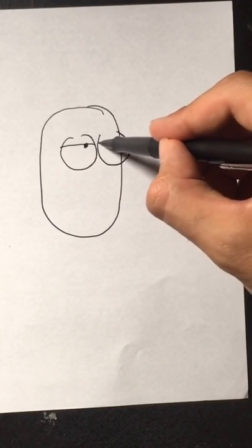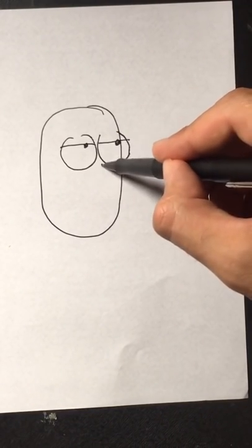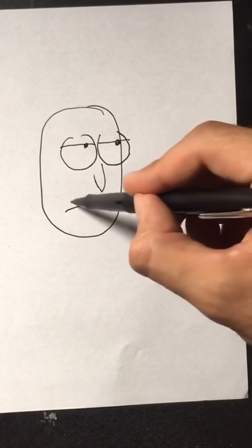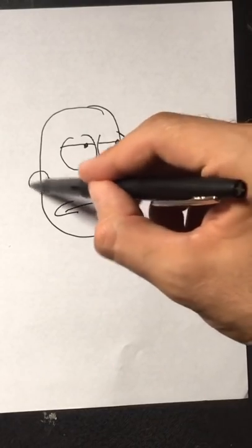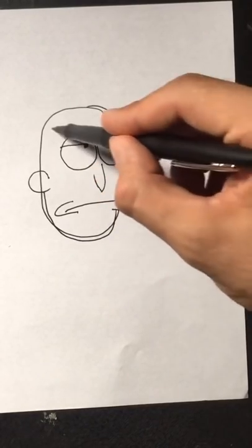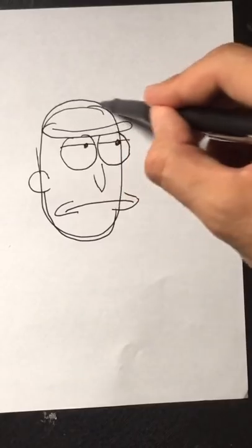Add the eyelids and then the pupils. Give him a U or V shaped nose that droops down, a line with parentheses for the mouth, a C for an ear, and his unibrow.